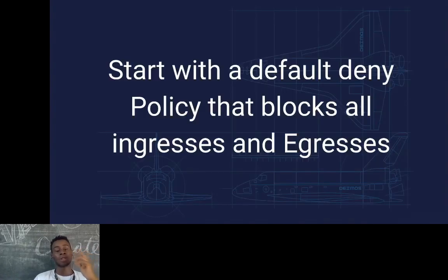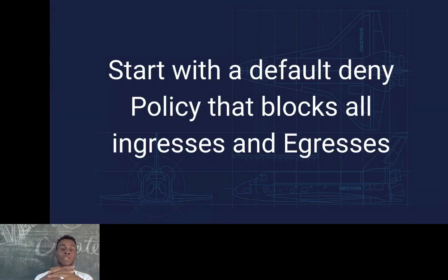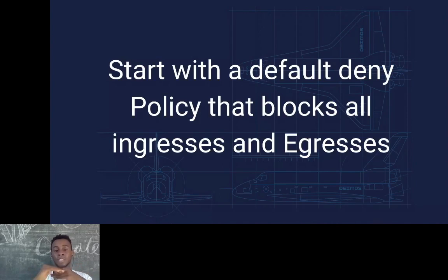As a rule of thumb when creating your network policy, you should start with a default deny. This policy simply drops every traffic in that particular namespace — no traffic comes in, no traffic goes out. Once you've done this, you can build up gradually and define granular network policies for your pods. This way, you don't miss any traffic and you avoid giving excess permissions.